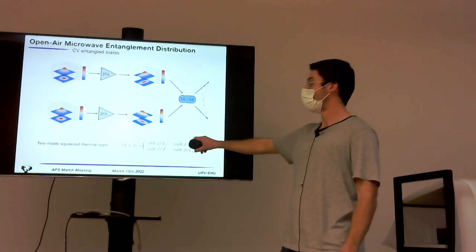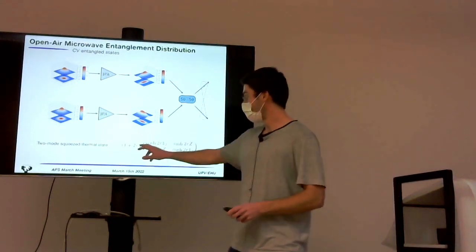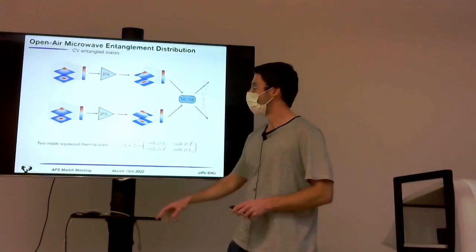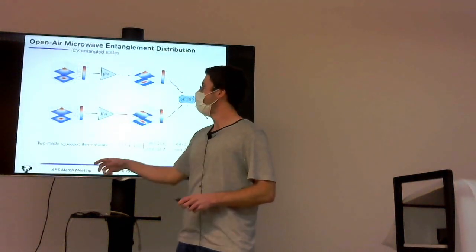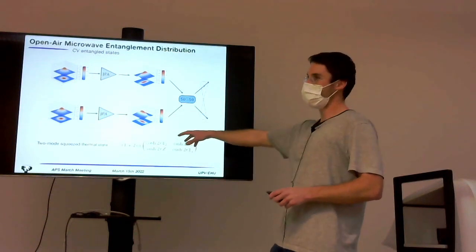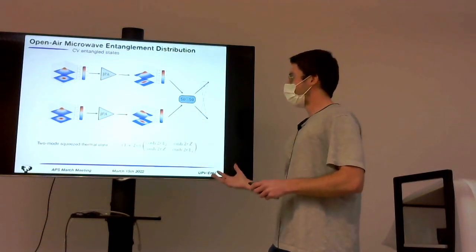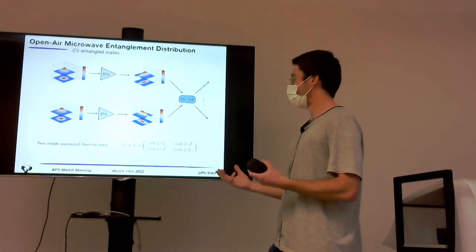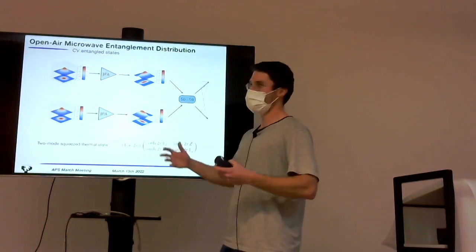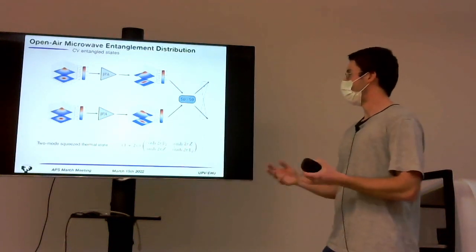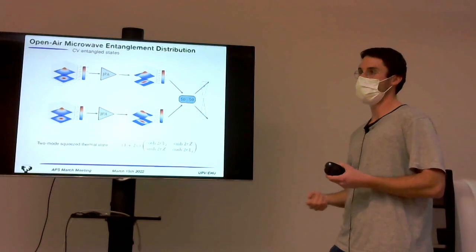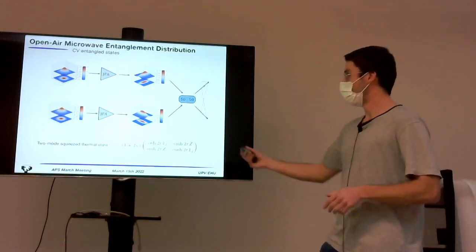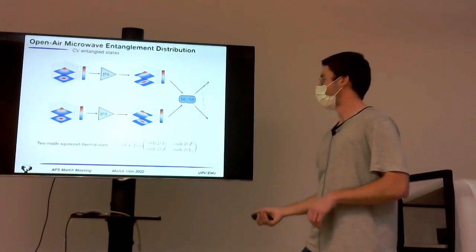This is the covariance matrix for a two-mode squeeze thermal state. And the thermal part, this n here assumes that the initial states, instead of being vacuum states, they may be thermal states. Also, this number of photons implies that there can be some other sources of noise coming from the JPAs, which there are some nonlinear effects, some imprecisions in the pumping of the parametric amplifiers, but mainly we can consider them as initial thermal states.